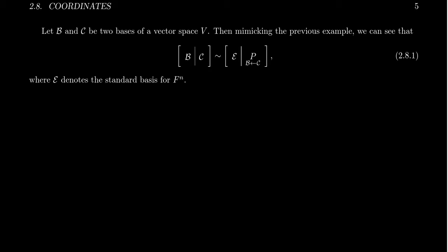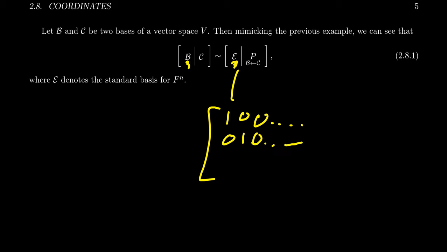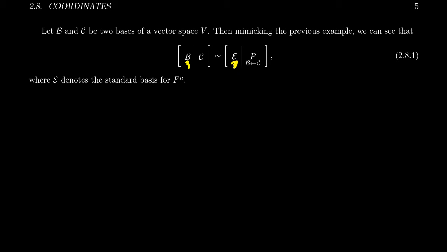That's because the row reduction reduces B into the standard basis for F^N. The standard basis looks something like (1,0,0,...), (0,1,0,...), (0,0,1,...) — it just has 1's along the diagonal and 0's everywhere else. That is the standard basis for F^N.